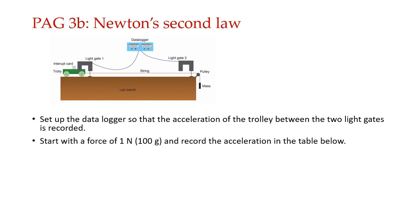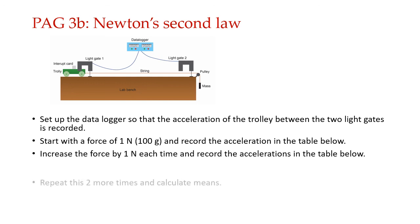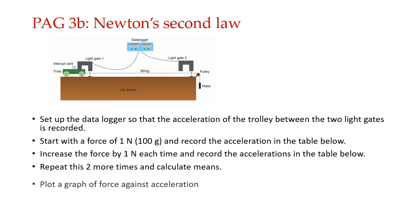You start with a force of 100 grams on it. 100 grams is 0.1 kilogram times 10. That is one Newton. And you record, you look into the data logger to see what the acceleration is. Then you will repeat. You will keep adding one Newton each time and we will again go for around six different values. For all the values, make sure you repeat the experiment and calculate the mean. That is another way of improving the accuracy of the experiment. And then you will plot a graph of force against acceleration. What would you expect to see? A straight line graph passing through 0, 0, which proves that force and acceleration are directly proportional.